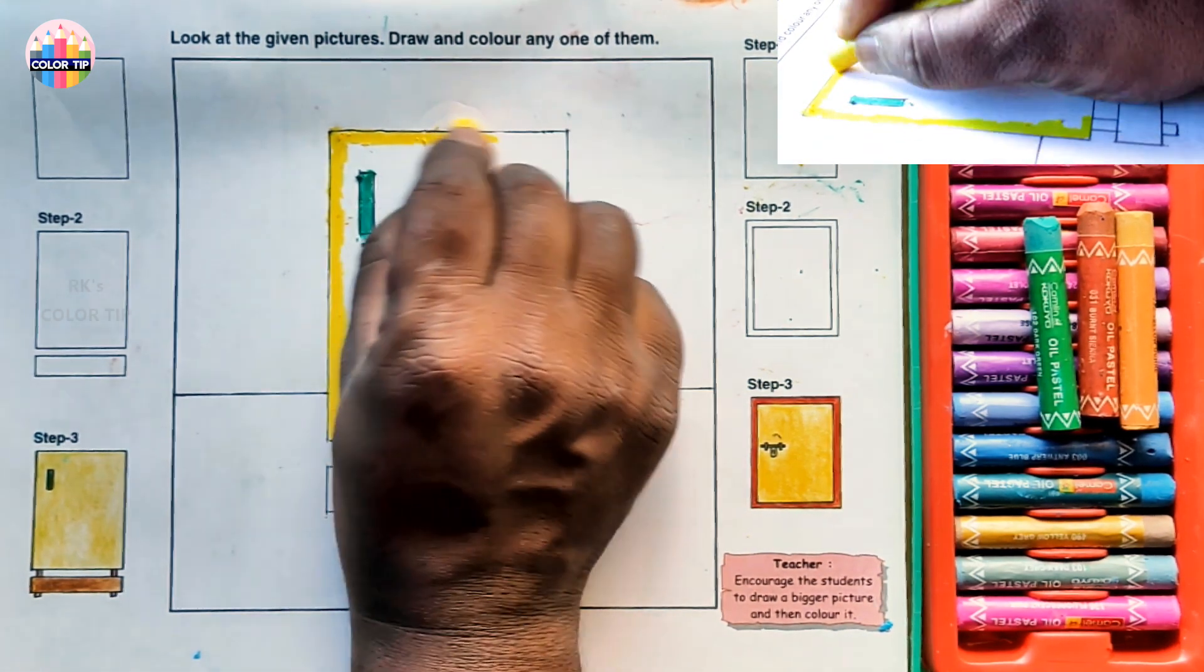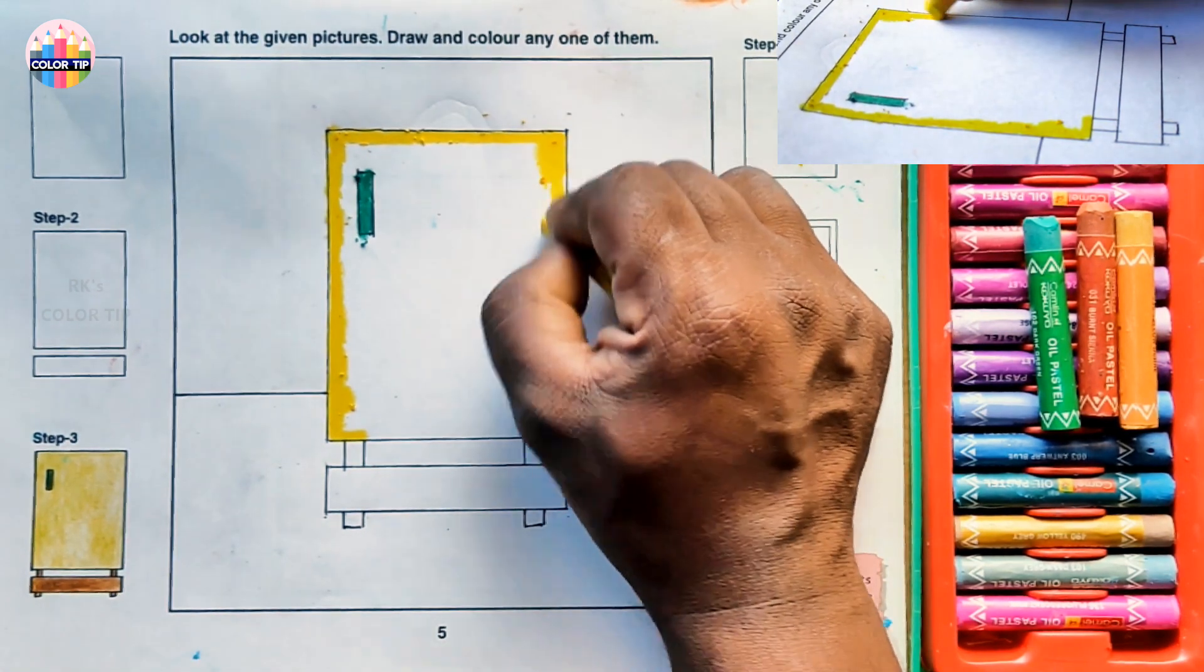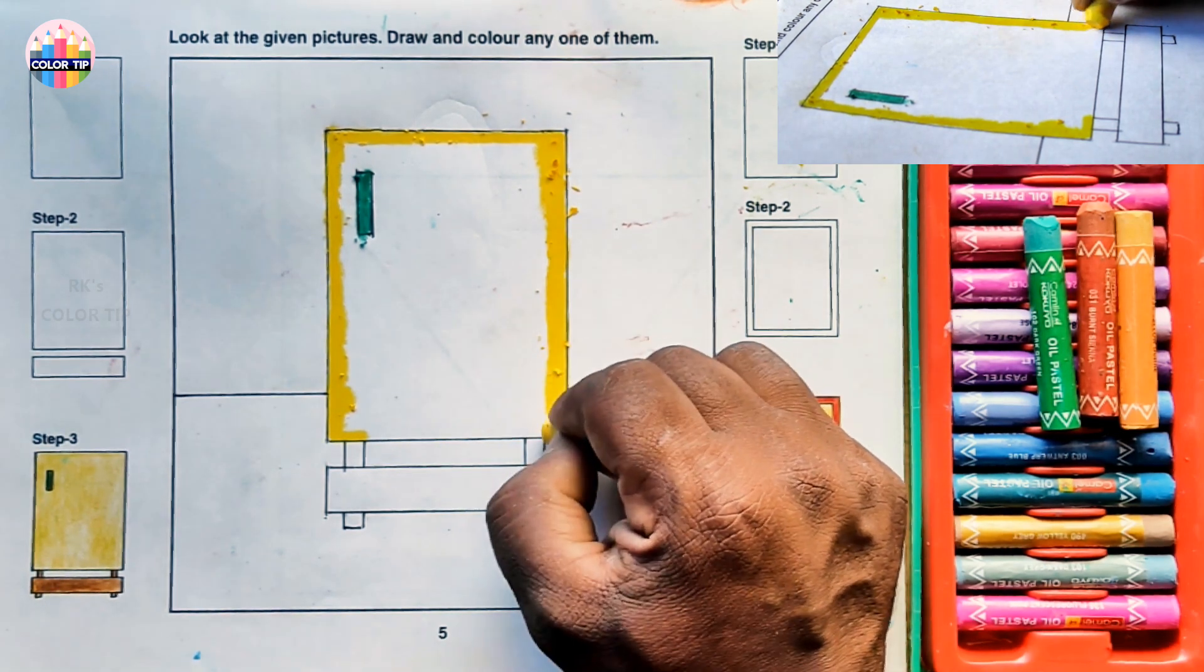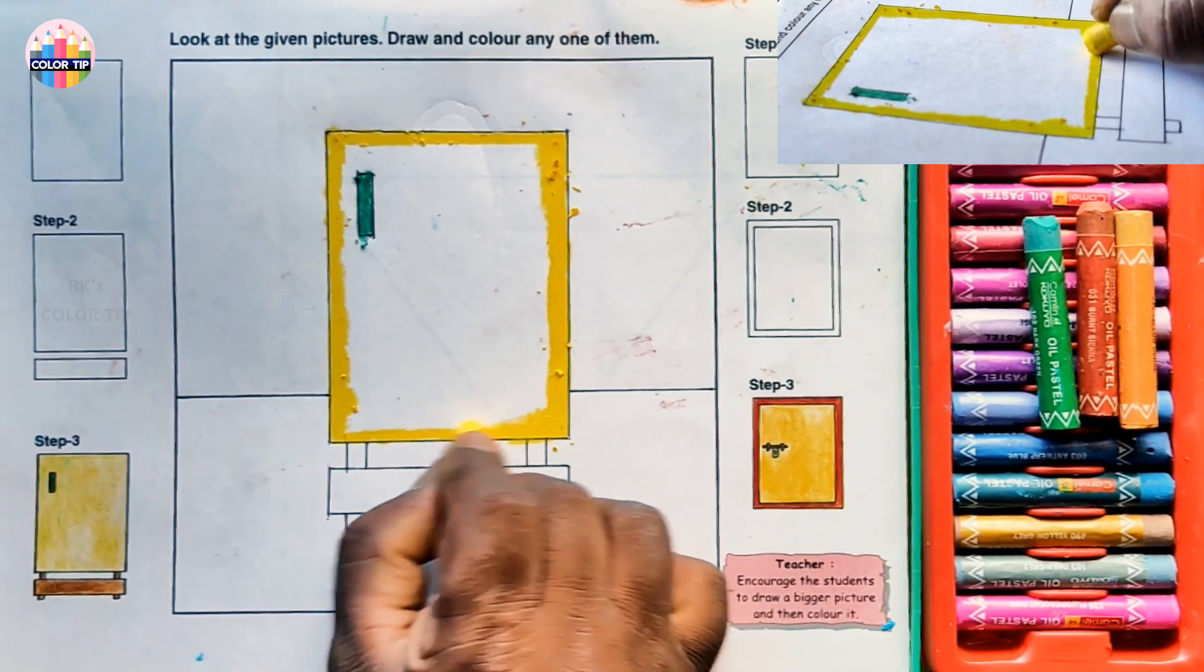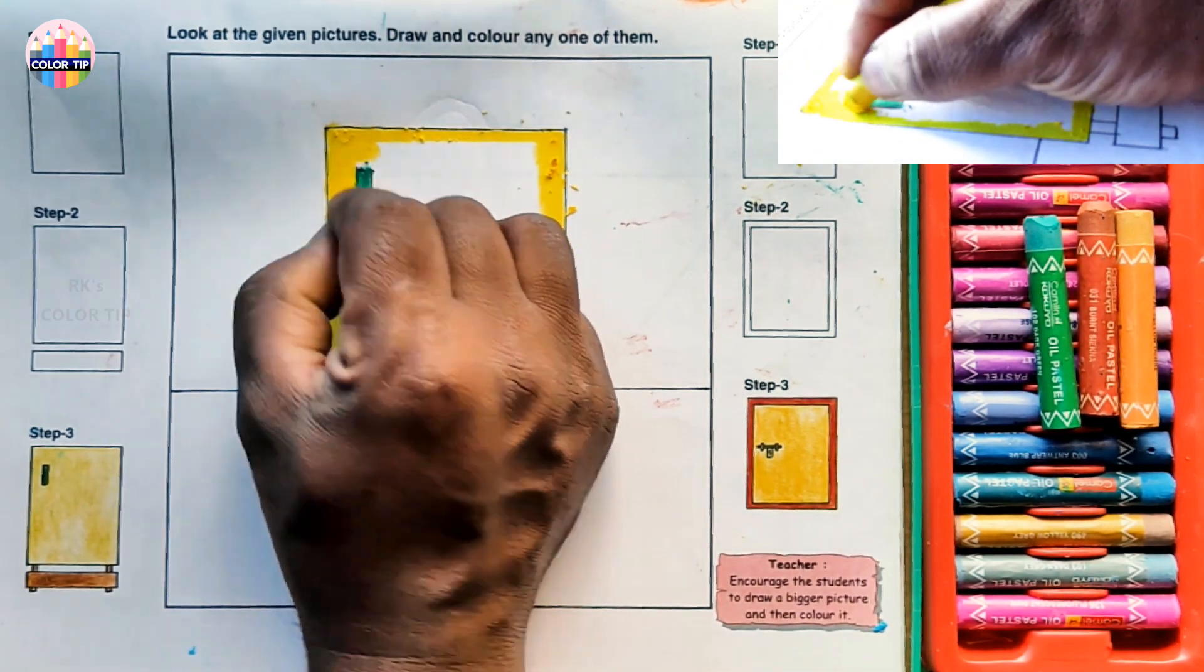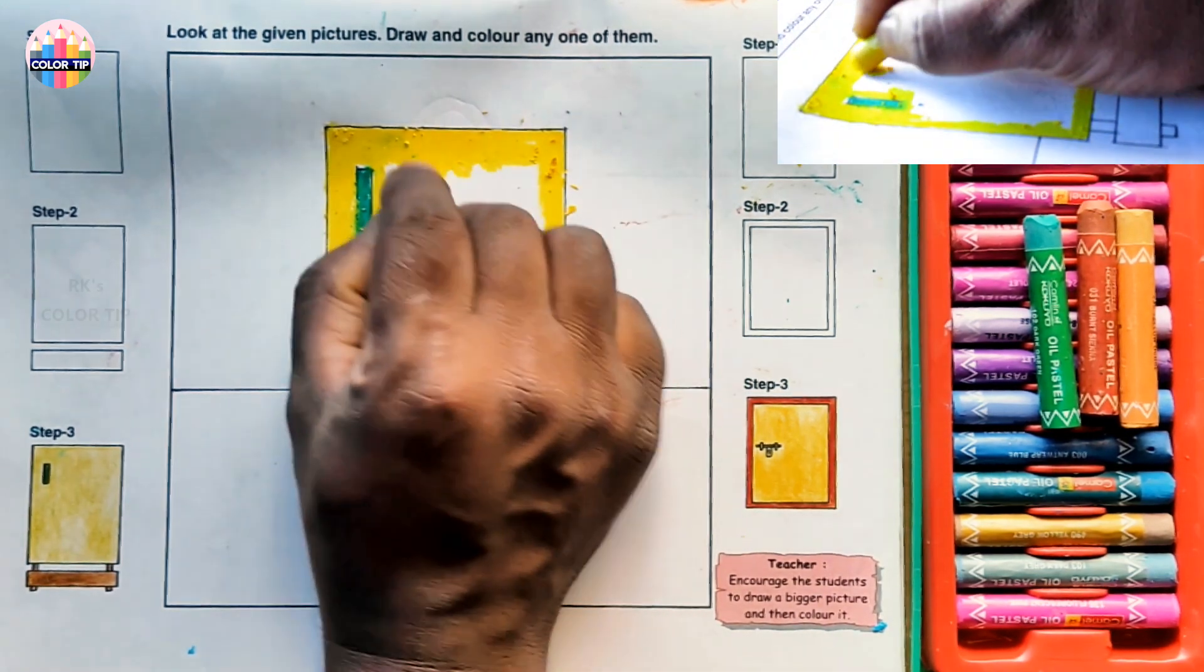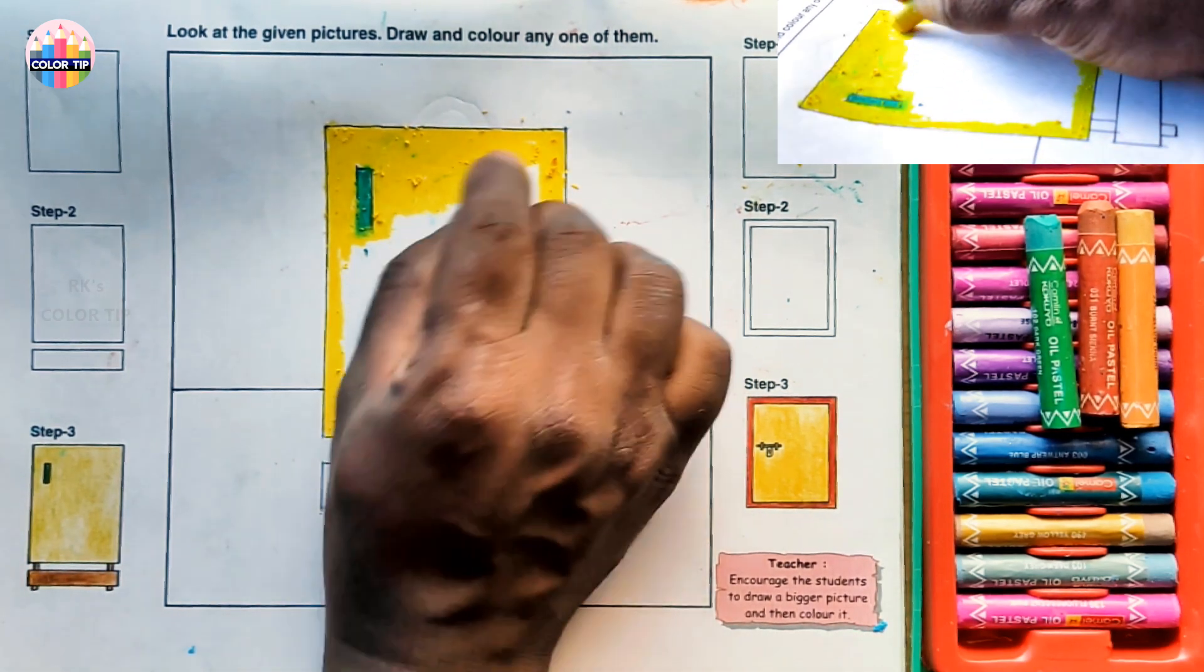Now at the top, always try to draw big in size and color it without gaps. I'm using round direction so color will fill nicely without gaps.